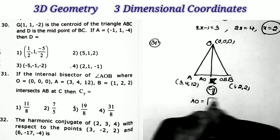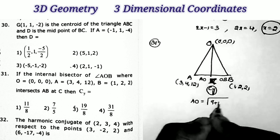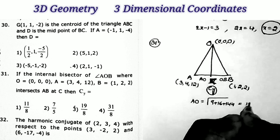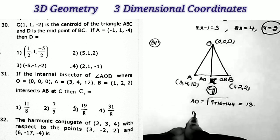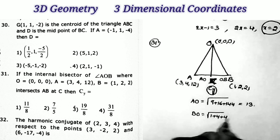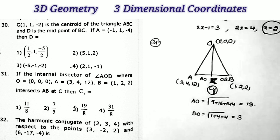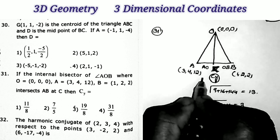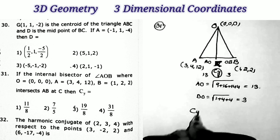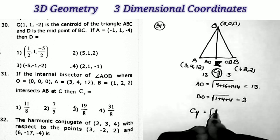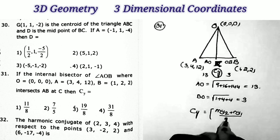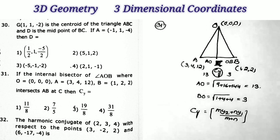C is the point that divides line segment AB in the ratio AO:OB. What is AO? Square root of 9 + 16 + 144 = √169 = 13. What is BO? √(1 + 4 + 4) = √9 = 3. So the ratio is 13:3.